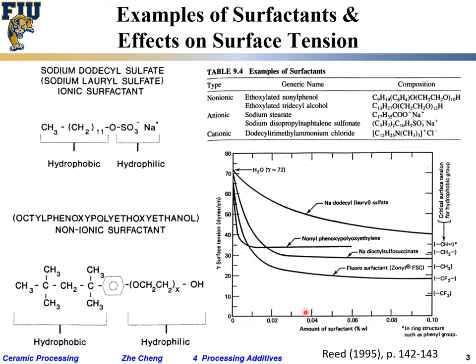Whatever surfactant you use, they all do one thing. Plotting surface tension versus concentration of surfactant added: as we add more and more surfactant, surface tension decreases. Starting from about 70 mN/m for water, as we add more surfactant the surface tension drops first rapidly and then gradually, reducing the interfacial energy to help disperse the oil phase in water as an emulsion or micelle.